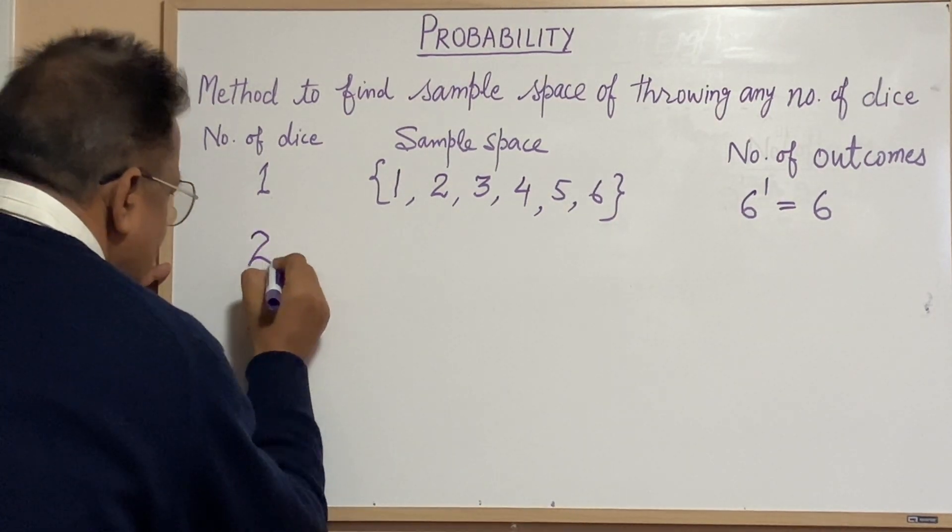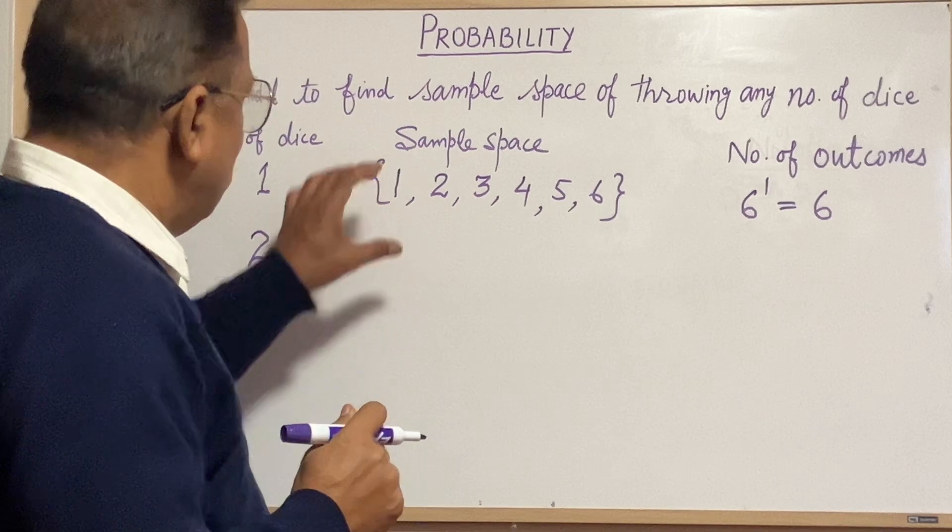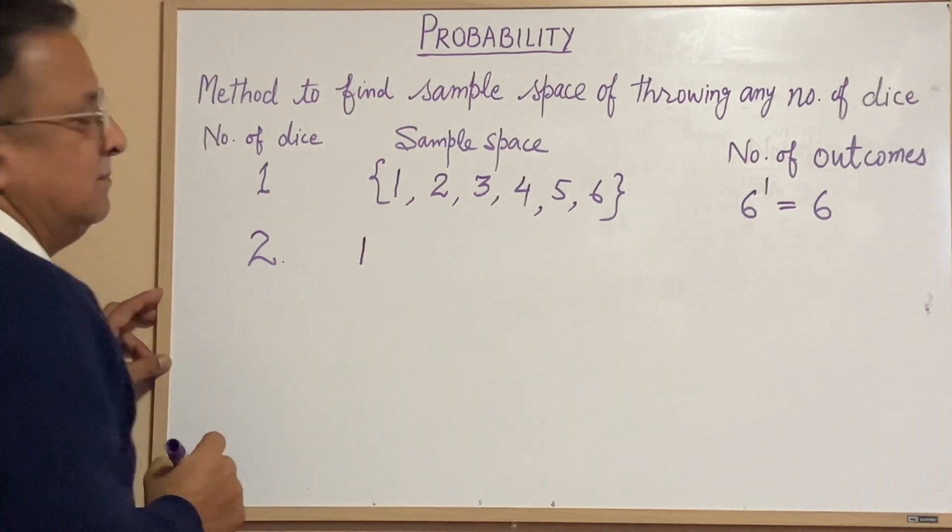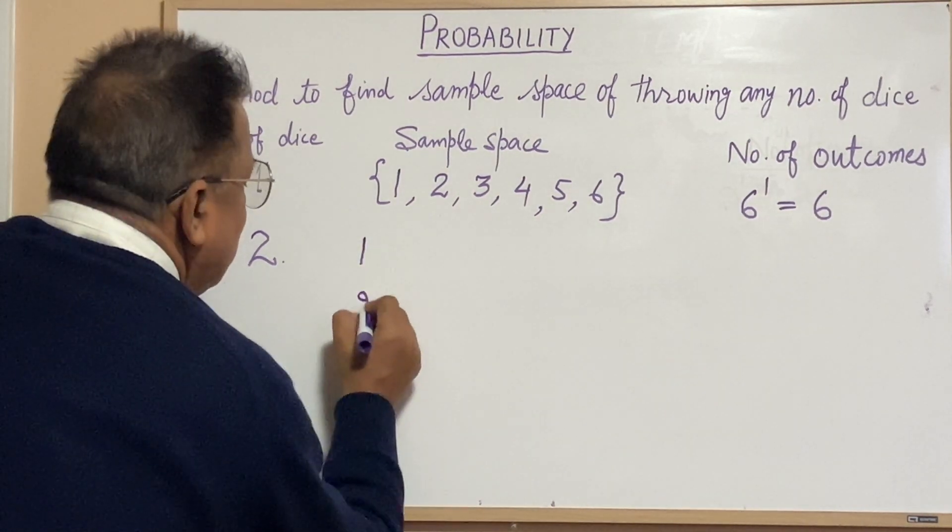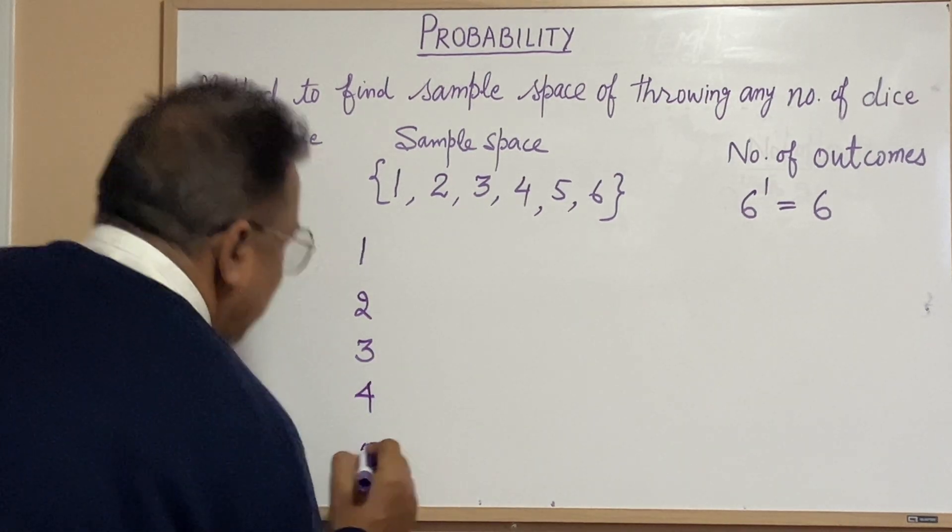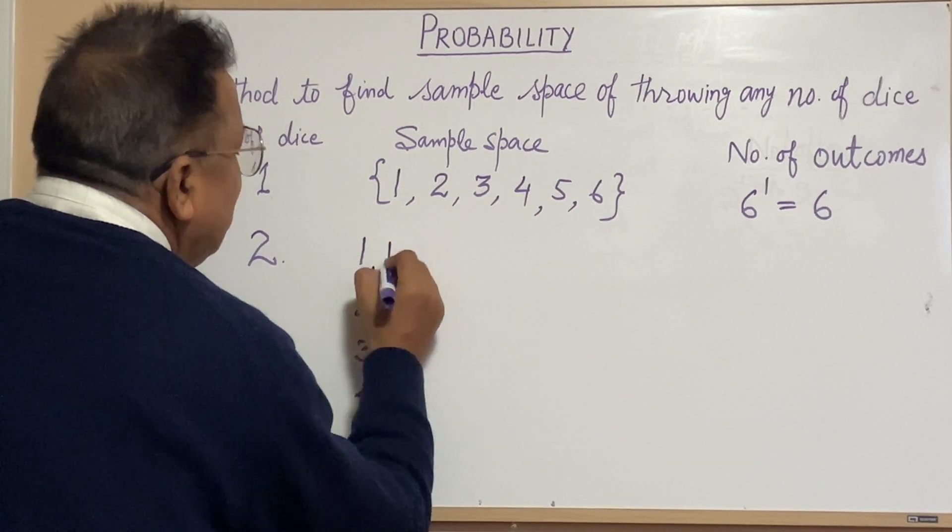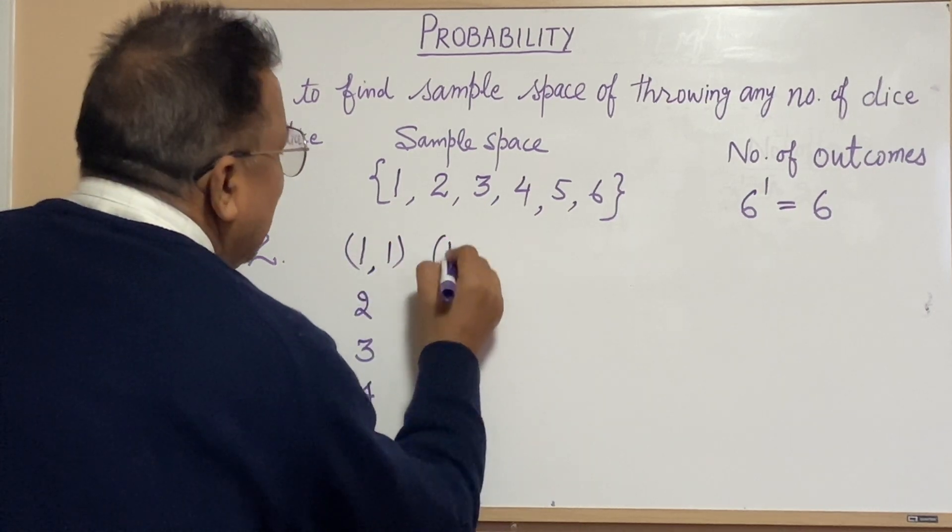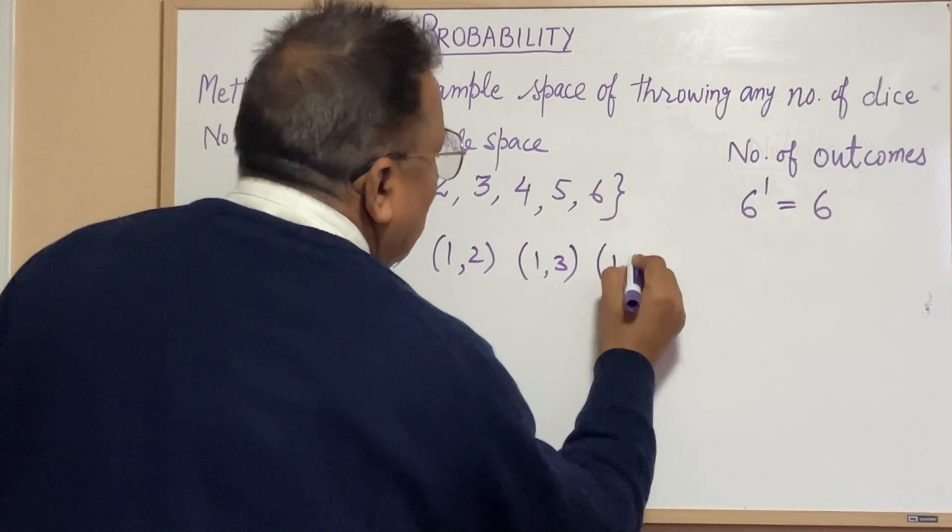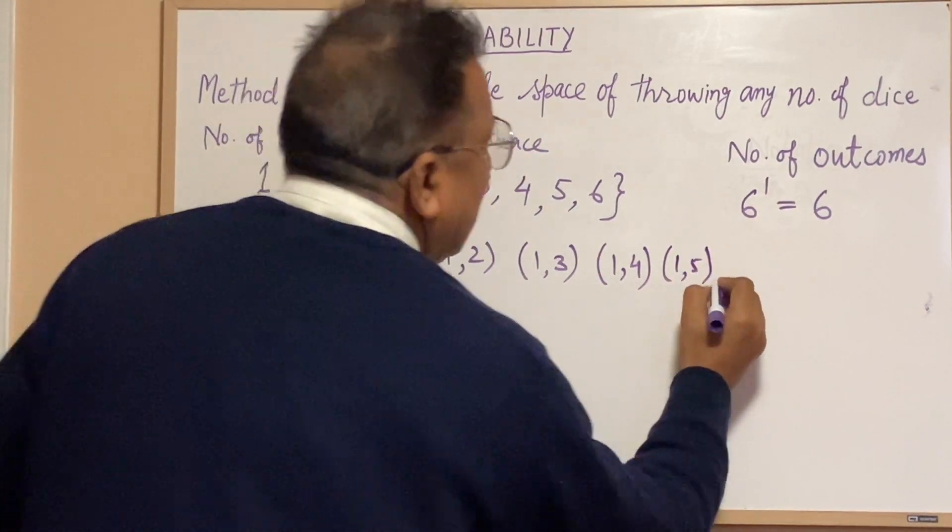Let us start with number of dice is two. When we throw two dices together, what will be the sample space? It's very simple. You will just write one here, then two, three, four, five, six. Now one can be together with one, then one with two, one with three, one with four, one with five, and one with six.